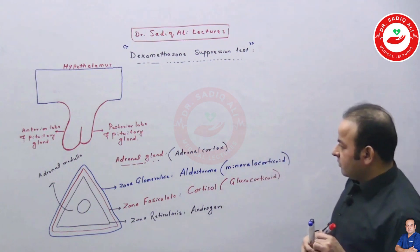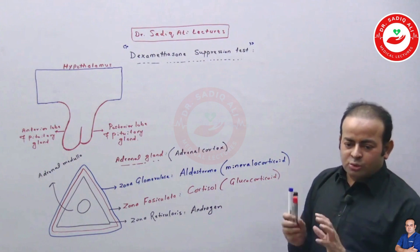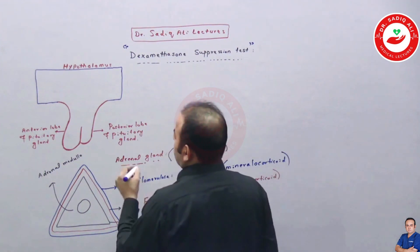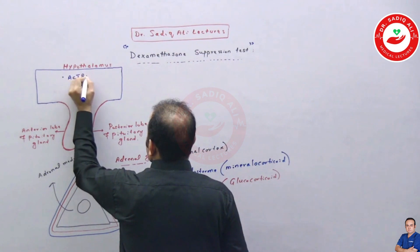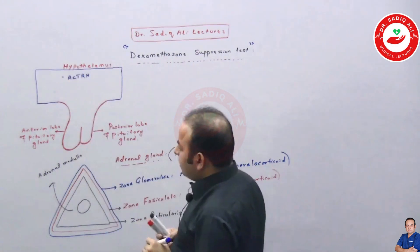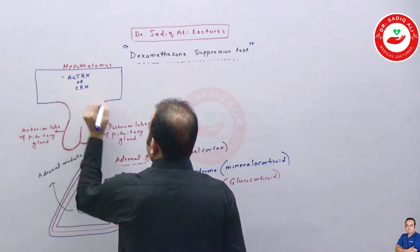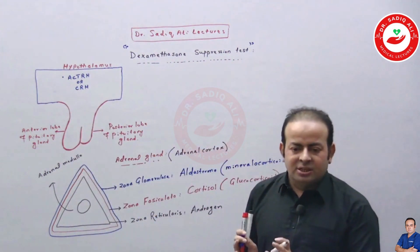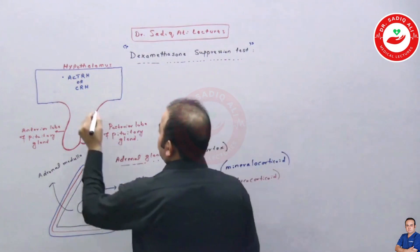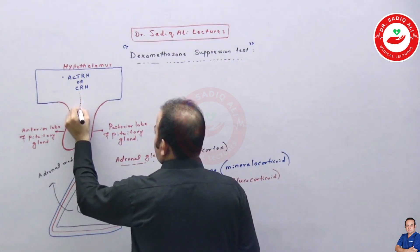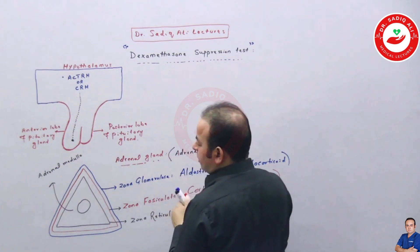Now focusing on the dexamethasone suppression test, we should know a bit of physiology first. In the hypothalamus, we have a releasing hormone known as CRH — corticotropin-releasing hormone. This CRH comes from the hypothalamus and travels down toward the anterior lobe of the pituitary gland.